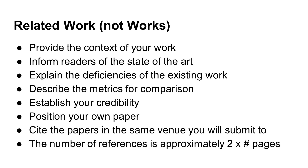Are existing methods too slow? Are they inaccurate? Are they too specific and cannot be generalized? Are they too expensive? This section often describes metrics for comparison. For example, if the deficiency is speed, then speed will be used for comparison. If the deficiency is cost, your method should have an advantage in cost. Thus, you should consider the deficiency and the metrics together.